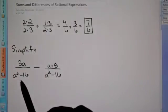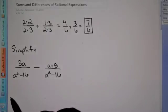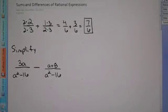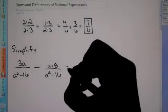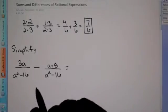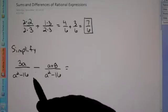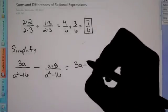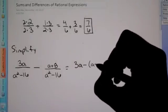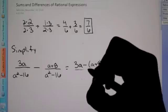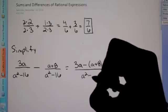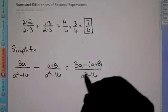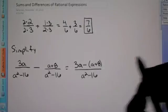Our first example is actually set up for us — see how the denominator is already the same? So we can go ahead and combine the numerators. But one thing to watch out for is this minus sign. Since it's minus, we have to put this side in parentheses. Now that we have the same denominator, we can rewrite both numerators over the same denominator.